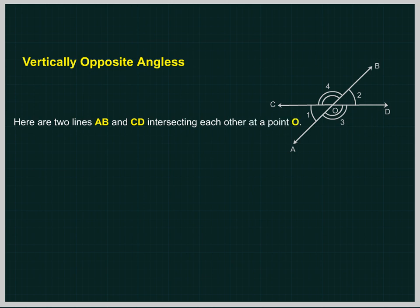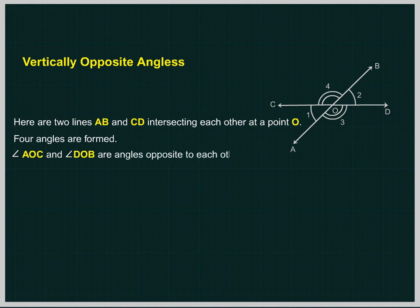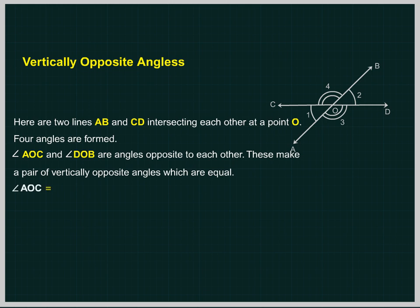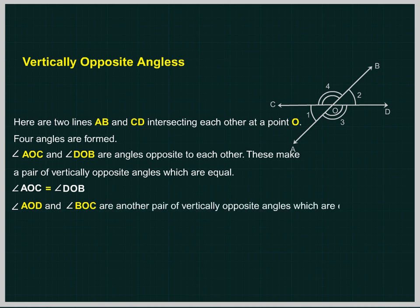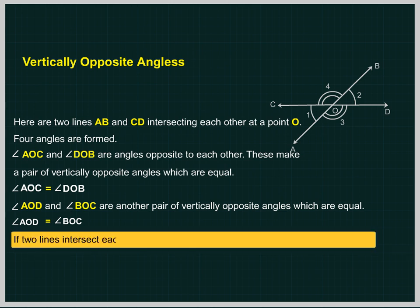Vertically Opposite Angles. Here, four angles are formed. Angle AOC and angle DOB are angles opposite to each other — these make a pair of vertically opposite angles which are equal, so Angle AOC equals Angle DOB. Angle AOD and Angle BOC are another pair of vertically opposite angles which are equal, so Angle AOD equals Angle BOC. If two lines intersect each other, the vertically opposite angles so formed are equal.